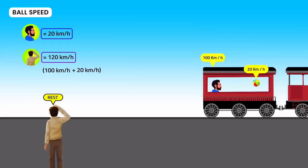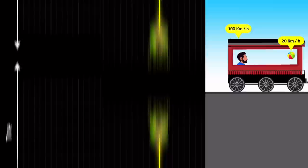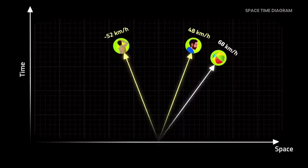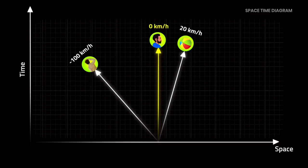Speed of an object differs by frame of reference. This can be explained by space-time diagrams. From your perspective your friend travels at 100 kilometers per hour and the ball at 120 kilometers per hour. But if your friend rotates his space-time axis, you move away from him at 100 kilometers per hour and the ball travels from him at 20 kilometers per hour.